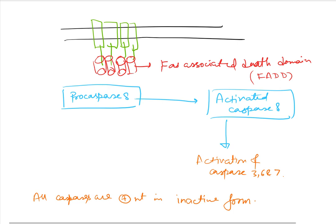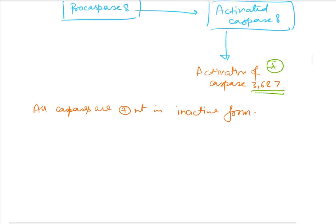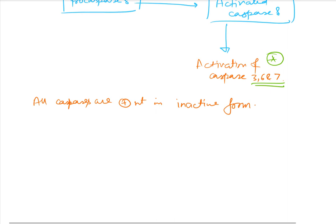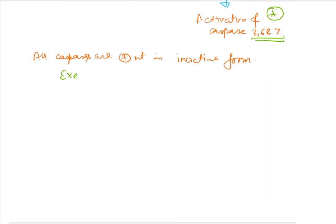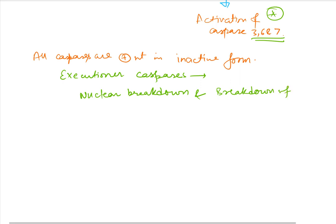After activation of caspases 3, 6, and 7 comes the execution phase. Since these are executioner caspases, they cause nuclear breakdown and breakdown of the cytoskeleton.